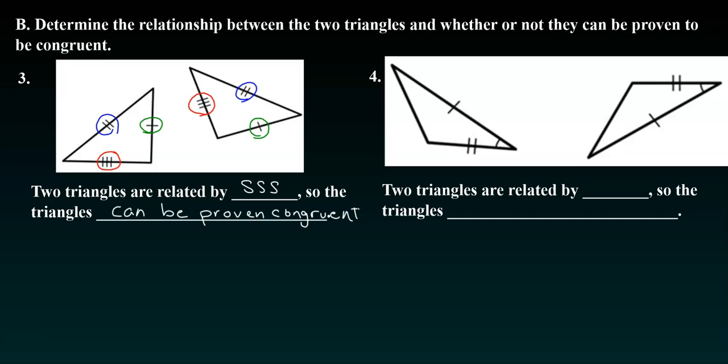So what I'd like you to do is try number four. You need to think of the different congruences that we know and see if you can figure out which one this is. So hopefully you found that the two triangles are related by side-angle-side, so the triangles can be proven congruent.